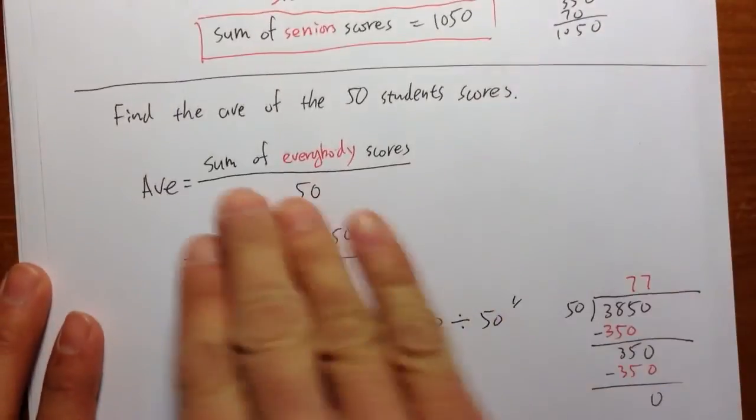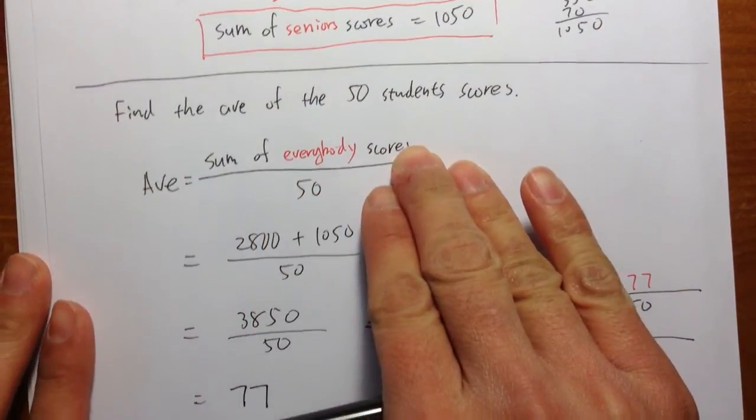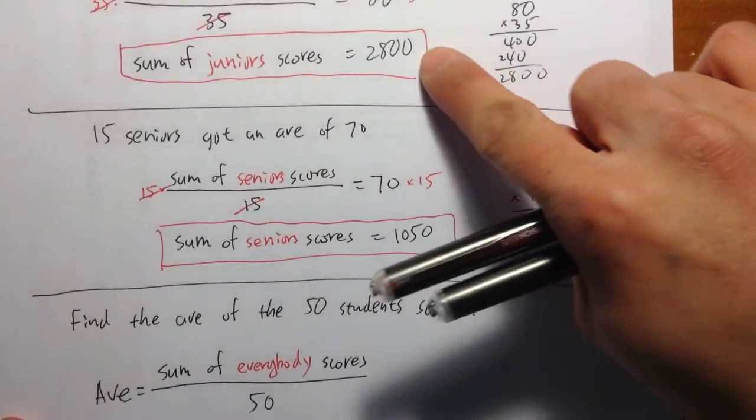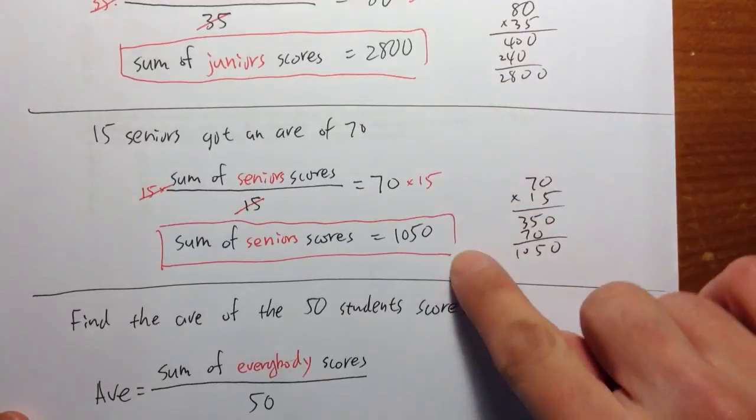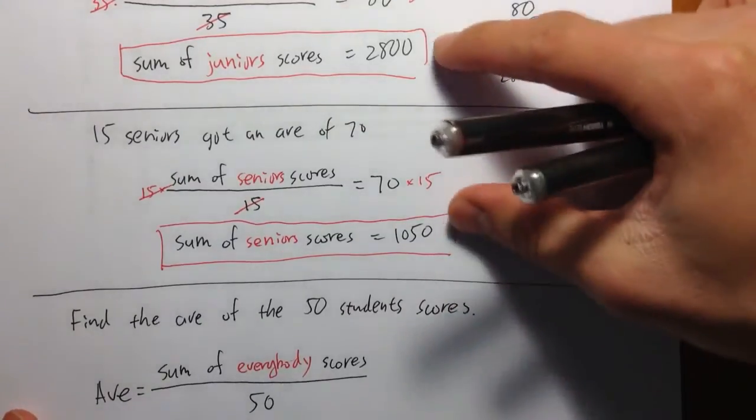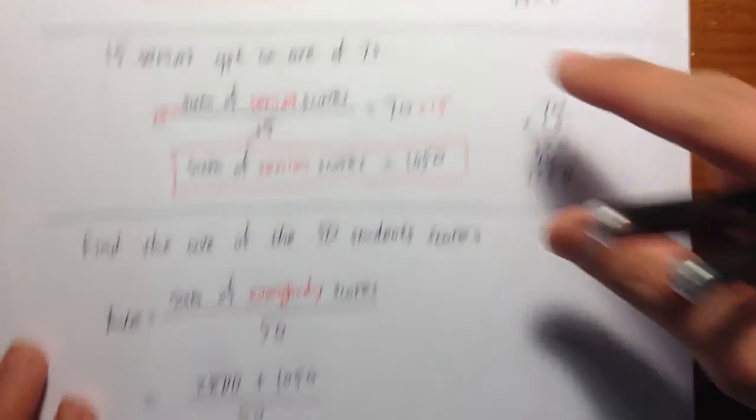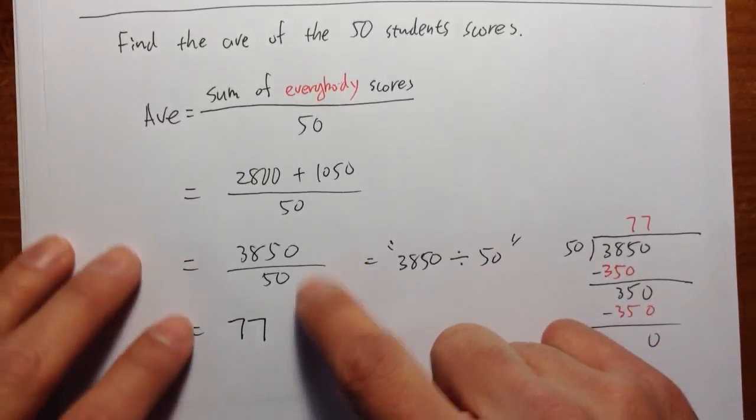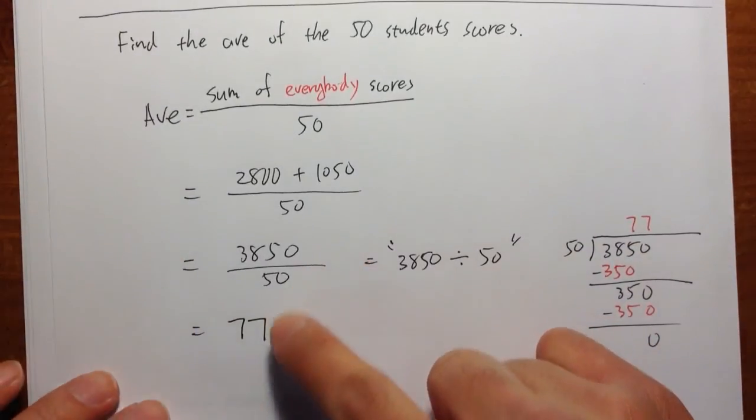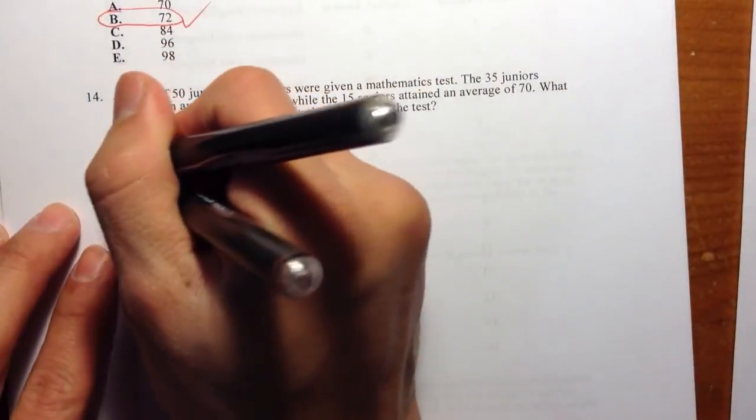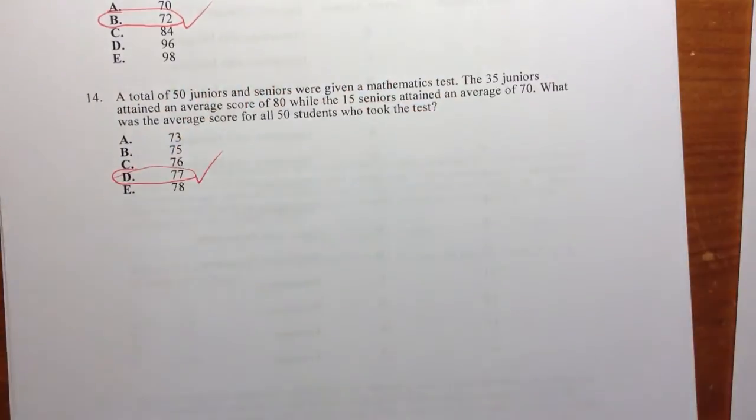When you find out sum of everybody's test scores, which we have to add the sum of the juniors and the seniors, we have to add this up, we have to add this up. And then divide by total of 50 students, we get 77. So if you take a look at the answer choices, that's choice D.